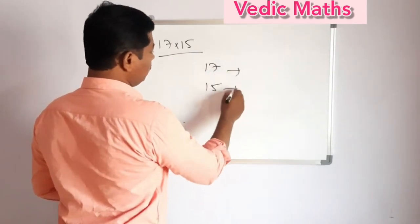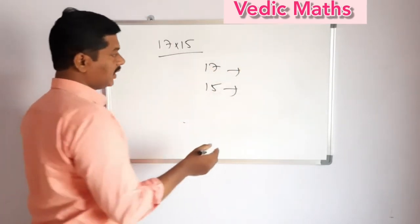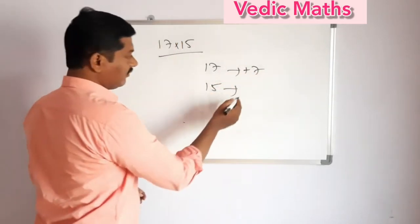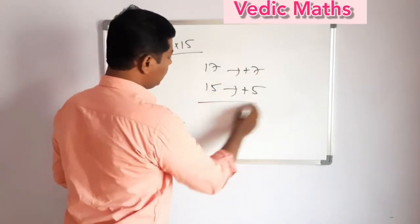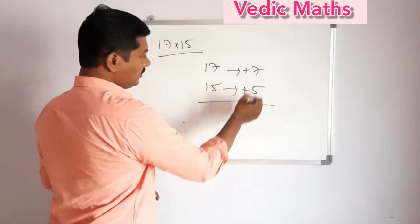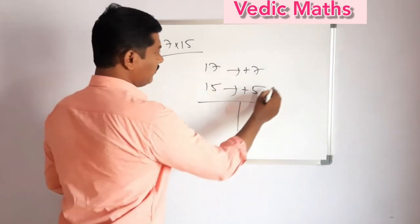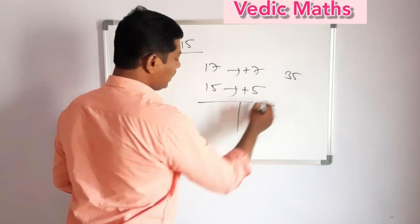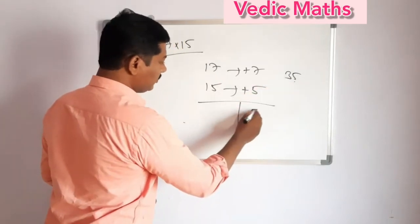Right side square, right side multiplication. So 17 is equal to, 15 plus 7 is equal to. So next single digit multiplication is equal to 35. So 35, 5 and 5 is equal to 3.